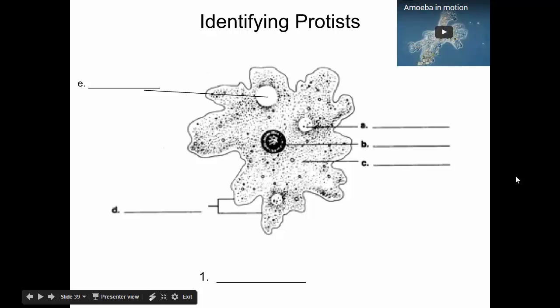What we need to talk about today is some parts of the protists. Yesterday we talked about some general characteristics and a few of the structures within them and what they do. But today we're going to look at some actual drawings of protists and label them a little more specifically.